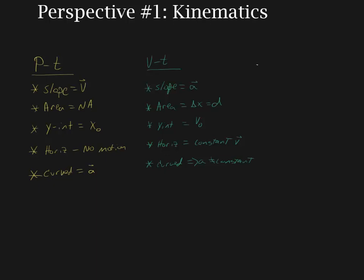Finally, we have the acceleration-time graph. We generally don't look at a slope, but just in case, the slope is equal to the jerk. The area is equal to the change in velocity — so remember, to draw the velocity-time graph you need to know what v-initial is. For almost all cases we deal with, the acceleration graph is going to be a horizontal line, meaning constant acceleration.